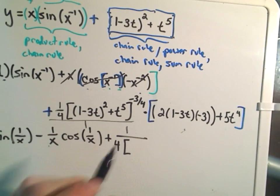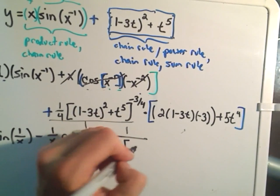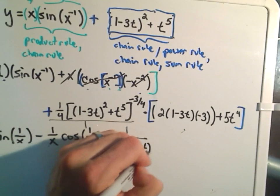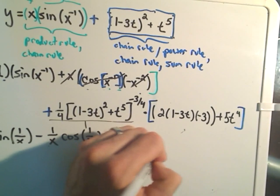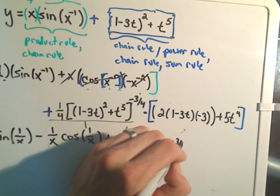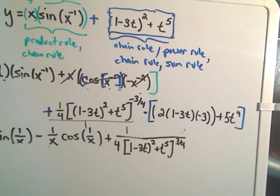And then, we'll be left with cosine of 1 over x. So, that'll take care of that part. Plus, we could think about all of this as being over 1. Well, this thing has a negative exponent. So, I could write that as 1 over 4. I could write it as the 4th root of something cubed. But, I'm just going to write it as 1 minus 3t squared plus t to the 5th raised to the positive 3 fourths power. Phew. Okay. So, that's all pretty long here so far. And, that's all going to get multiplied by this other stuff.